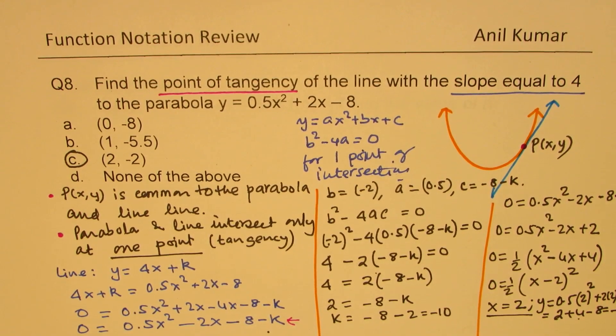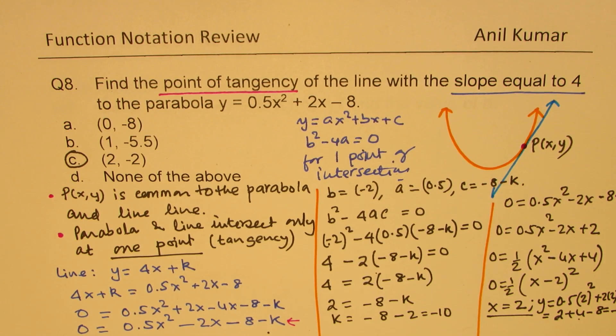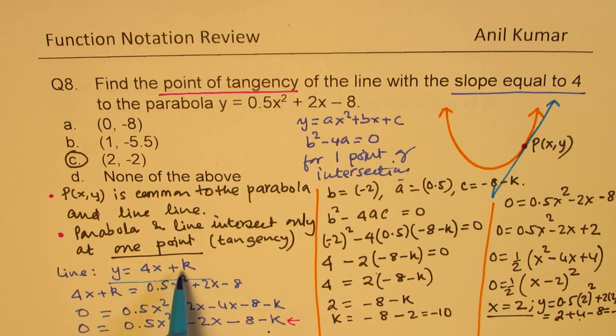So we get (2, -2) as our solution. Is that clear to you? So that is how we solve this particular question. This is an extremely important question, slightly difficult at this stage, but I hope you understood the solution. The whole idea is that since we are given the slope 4, we can say that the equation of the line should be y = 4x + k.